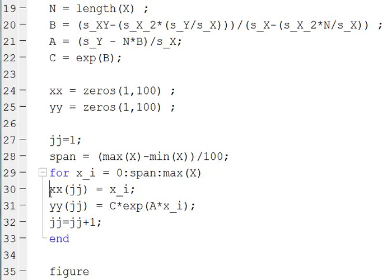First off, we redefine double x as x of i, and then double y is C times the exponential of A times x of i. And then we increase our counter.